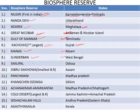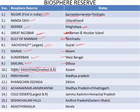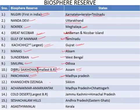Next is the Simlipal Biosphere Reserve in the state of Odisha. After that, the Dibru Saikhowa Biosphere Reserve in Assam — it is the smallest Biosphere Reserve of India. Next is the Pachmarhi Biosphere Reserve in the state of Madhya Pradesh. Next is the Kanchenjunga Biosphere Reserve in the state of Sikkim. After that, Achanakmar-Amarkantak in the states of Madhya Pradesh and Chhattisgarh.